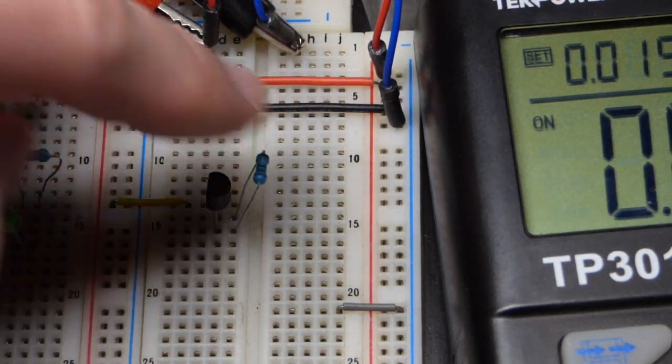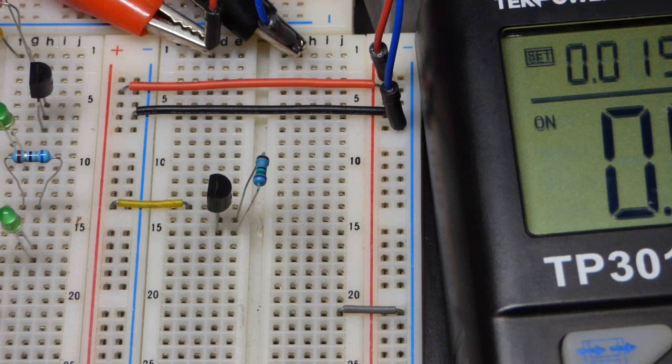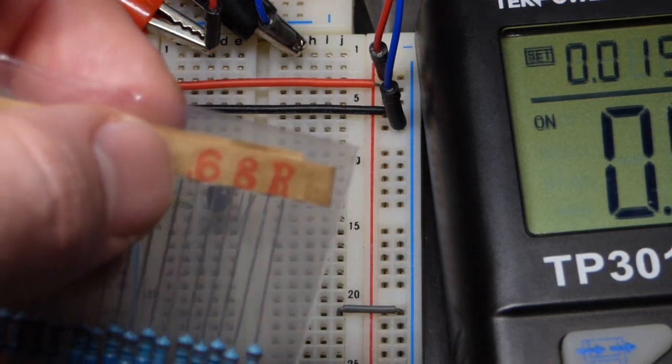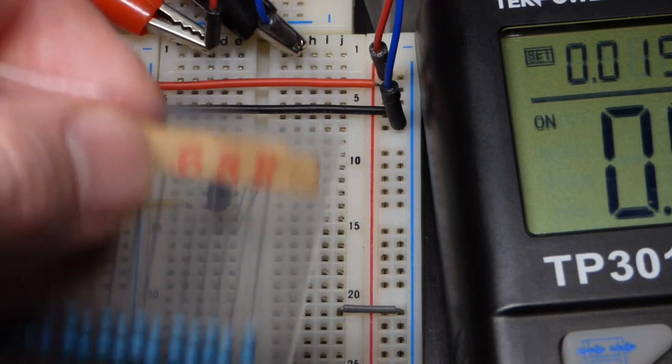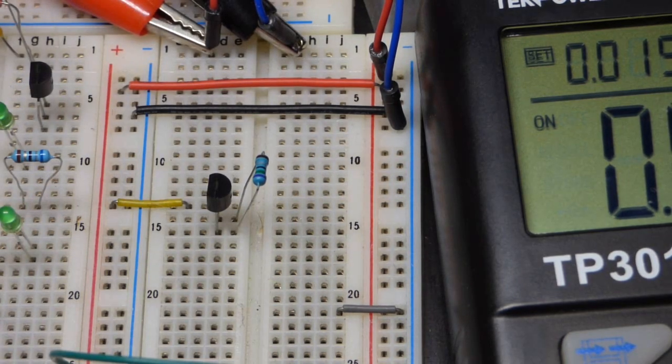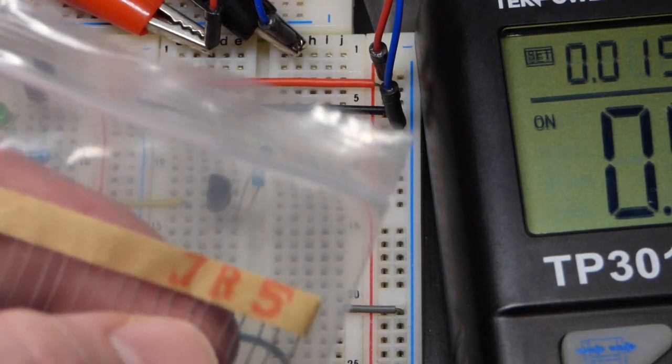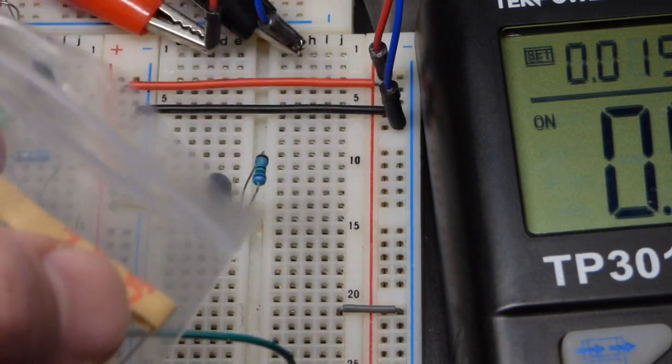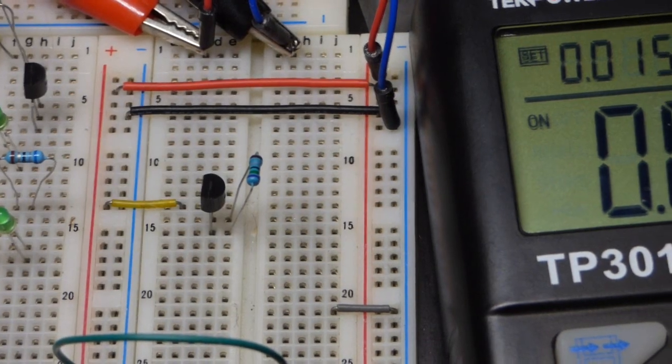And so this is a 7.5 ohm resistor, a very low value resistor. I have a bunch of resistors that begin with 6.8. I'd prefer 6.8 ohm, but I can't find that. So I got 7.5, slightly more resistance will have slightly less current.